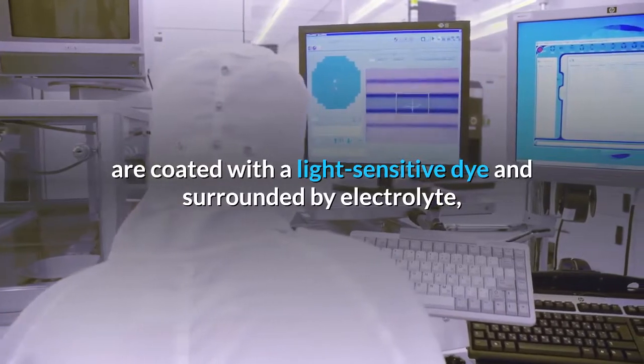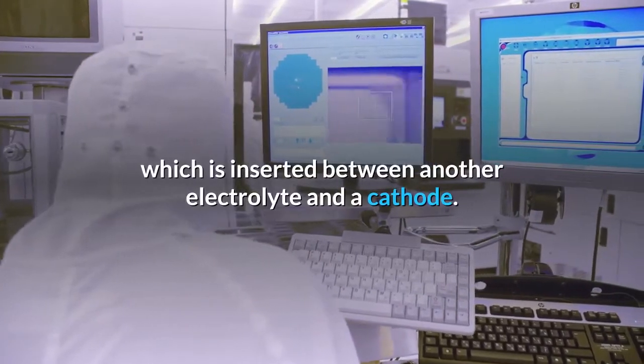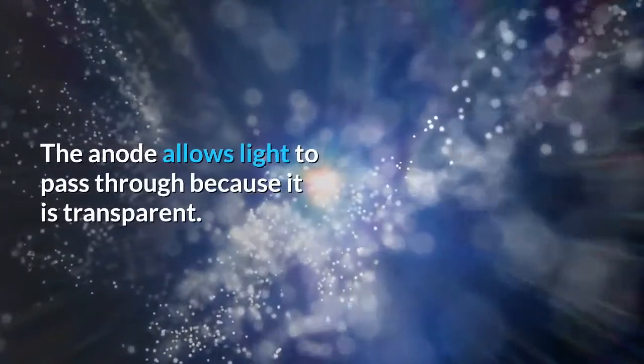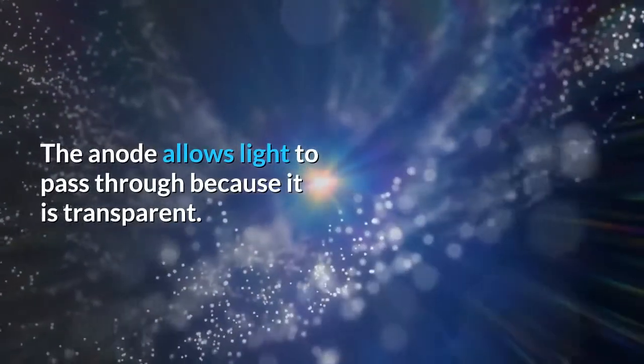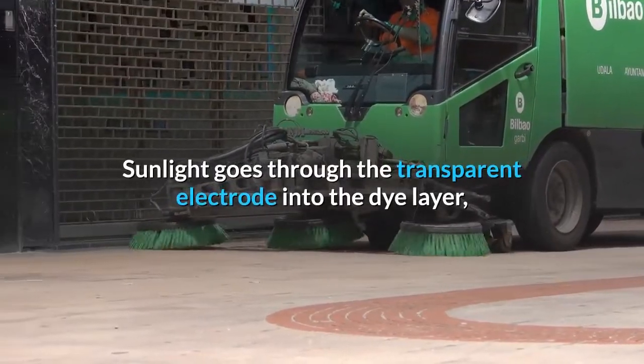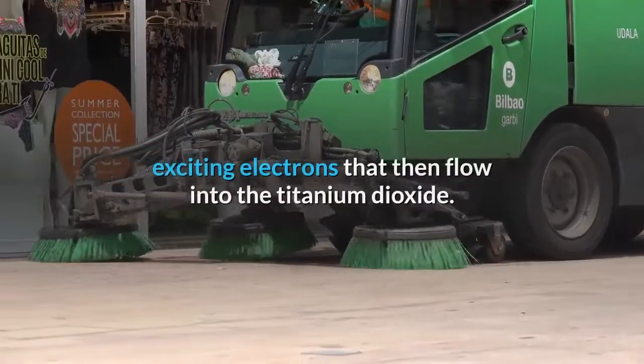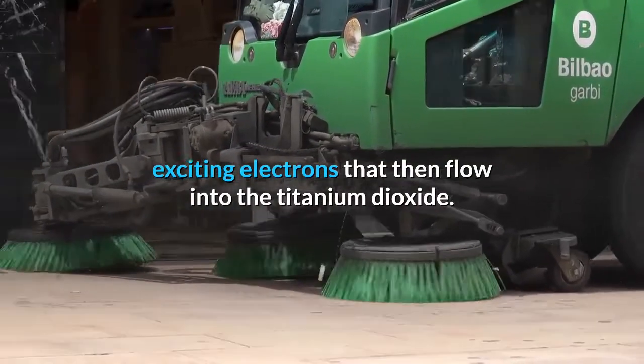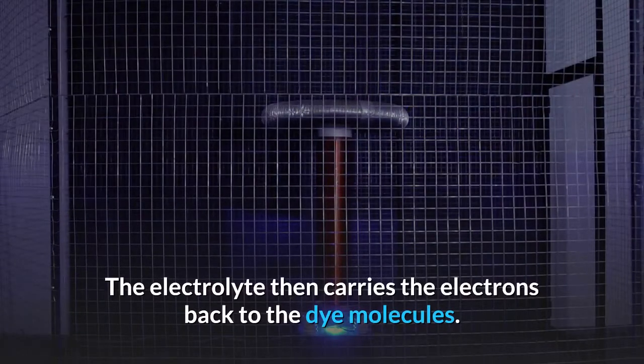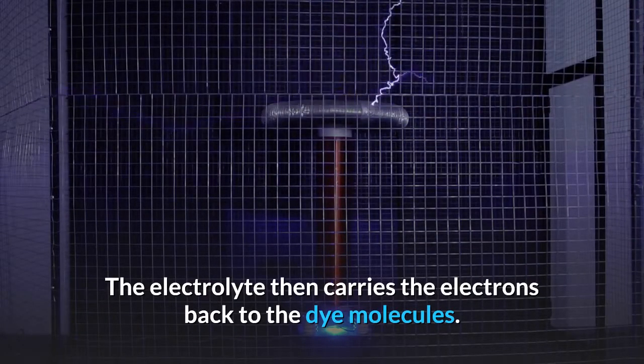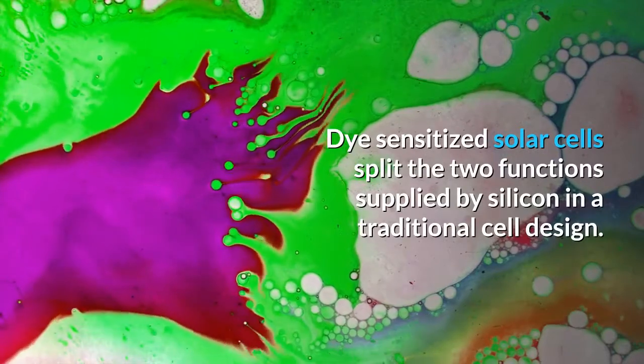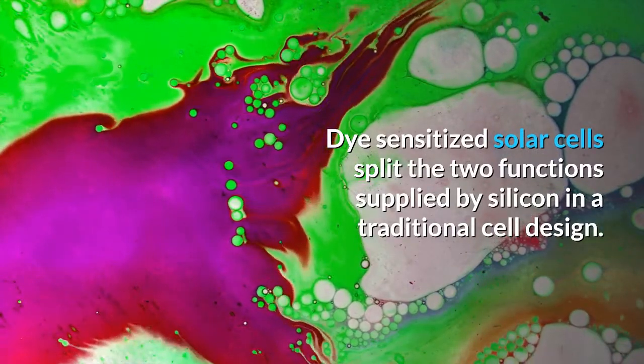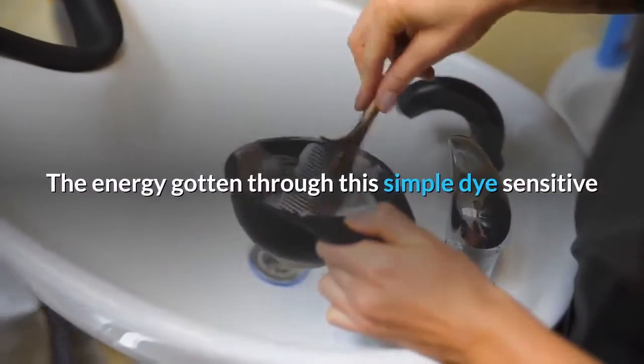The anode allows light to pass through because it is transparent. Sunlight goes through the transparent electrode into the dye layer, exciting electrons that then flow into the titanium dioxide. The electrolyte then carries the electrons back to the dye molecules. Dye sensitized solar cells split the two functions supplied by silicon in a traditional cell design. The energy gotten through this simple dye sensitive cell can be collected to drive electrical system loads.